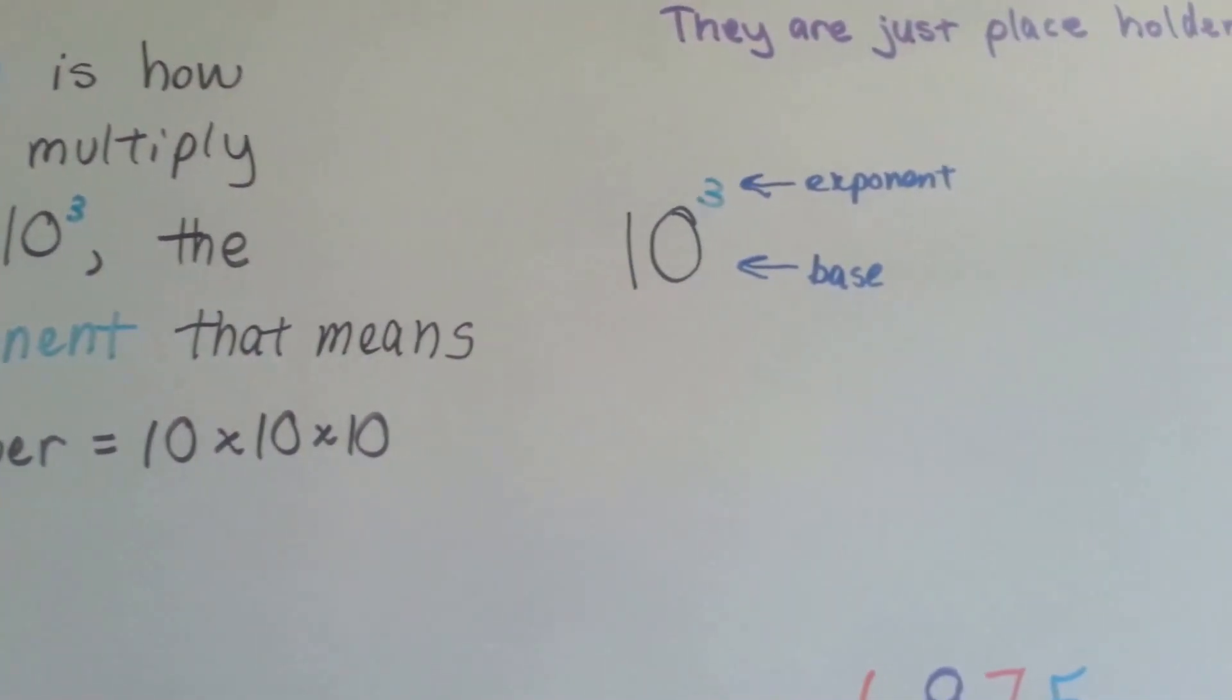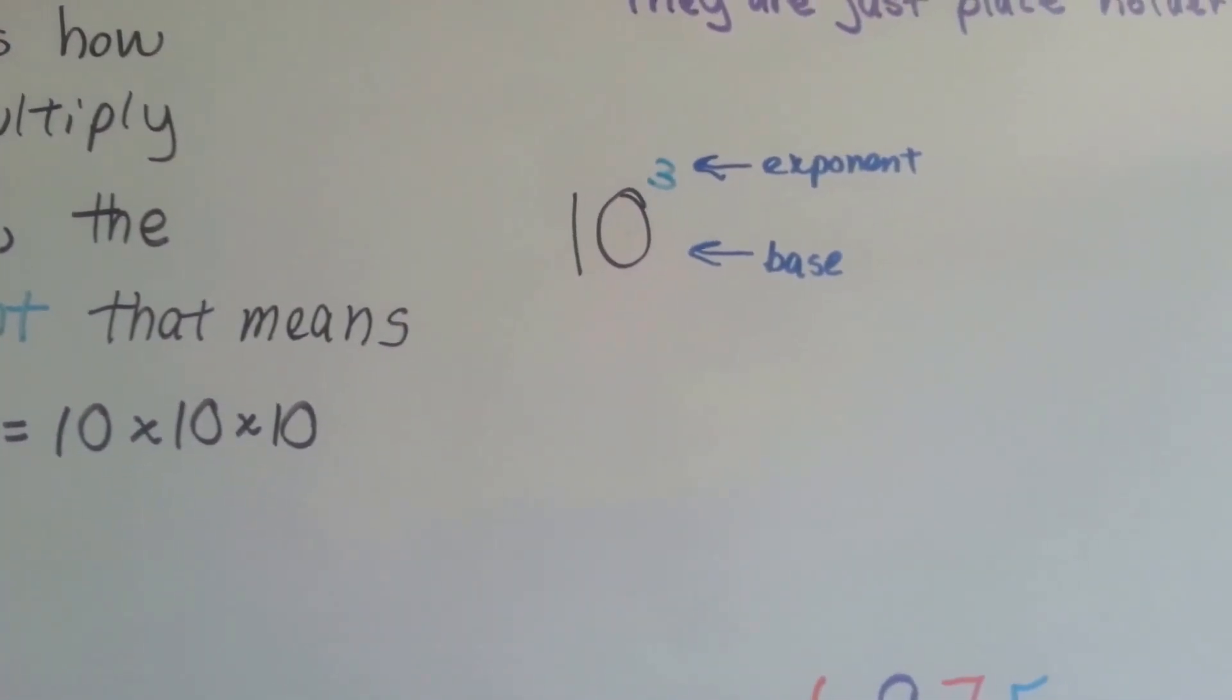See, the little 3 is an exponent, and then the 10 would be the base, okay? So now you'll know what I'm talking about.